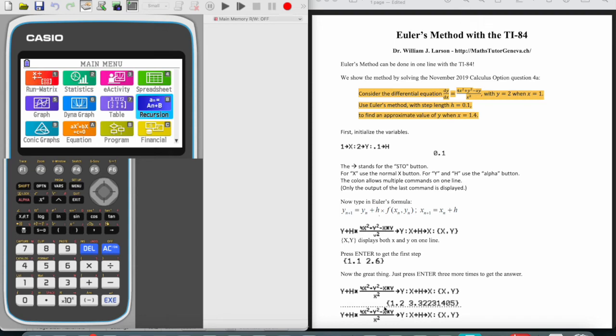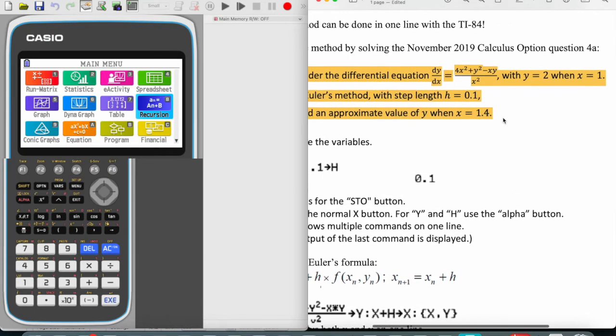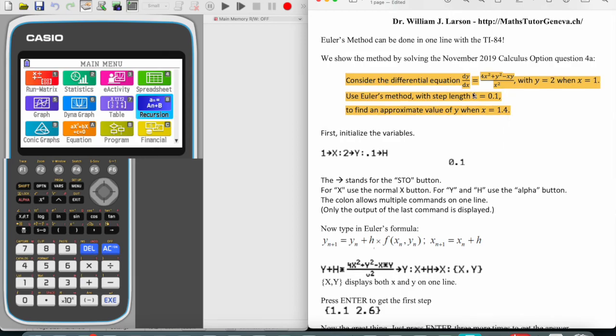This video shows how to do Euler's method on the Casio CG50 instead of doing the whole table by hand. Here we're given a question highlighted in yellow. We're basically given the differential equation, the initial condition when x equals 1.